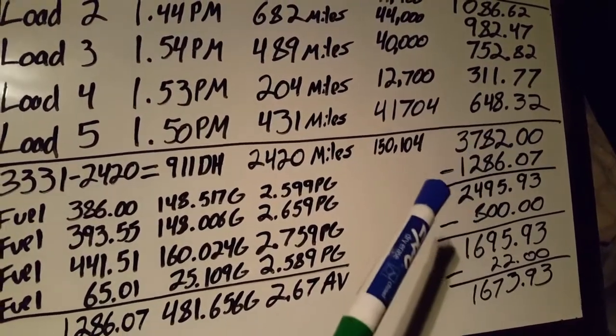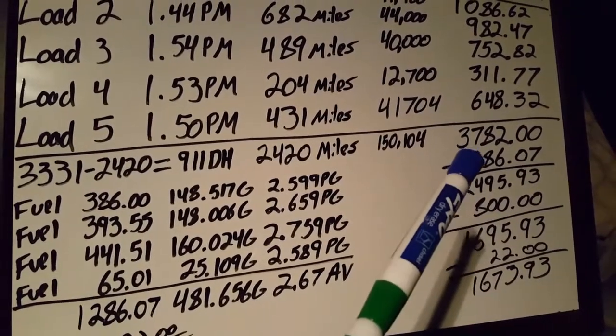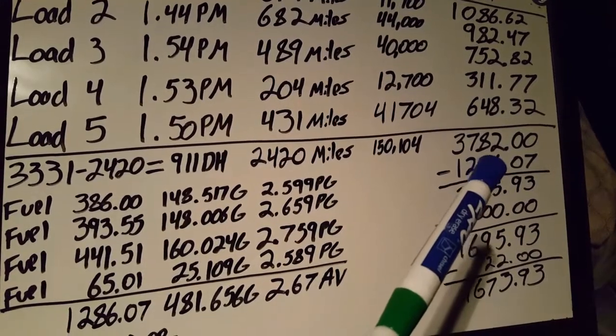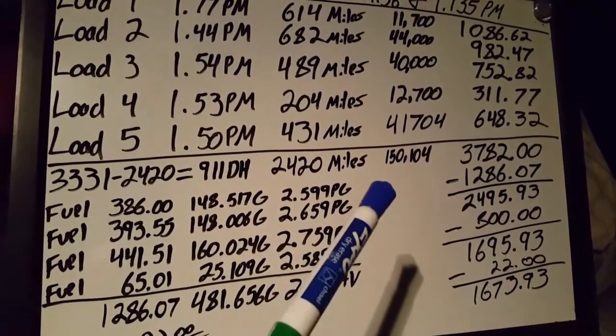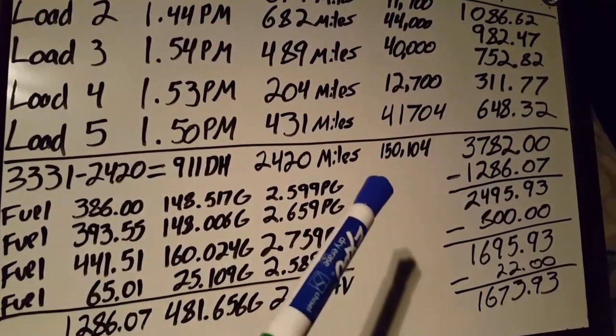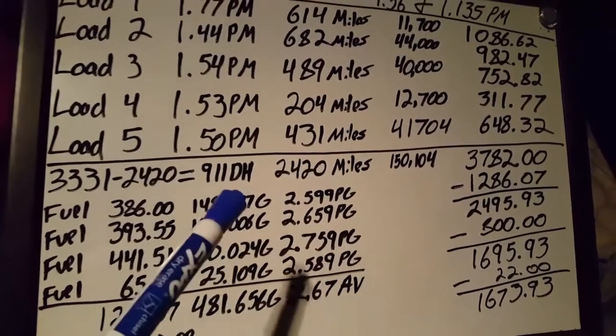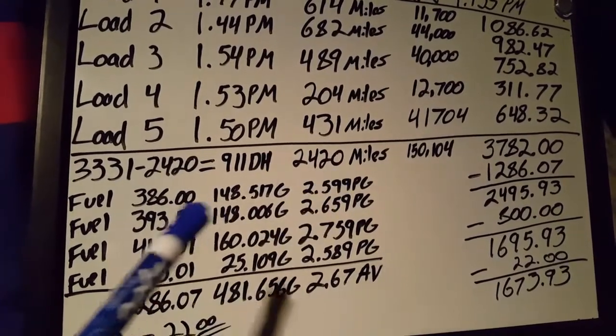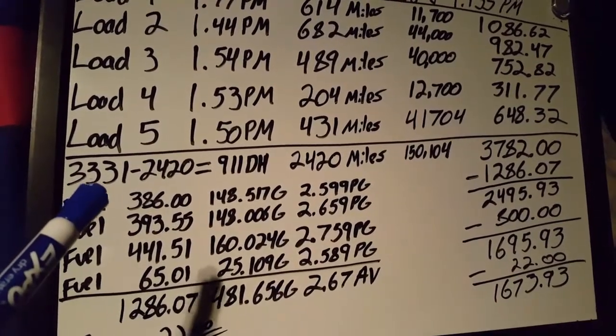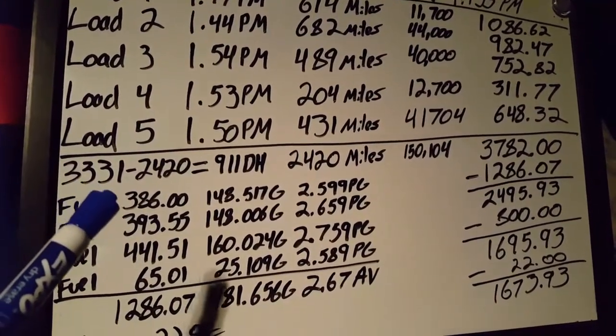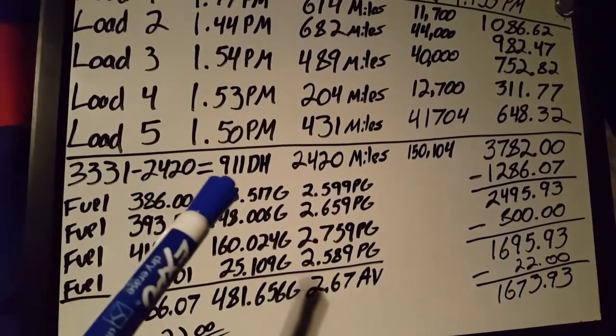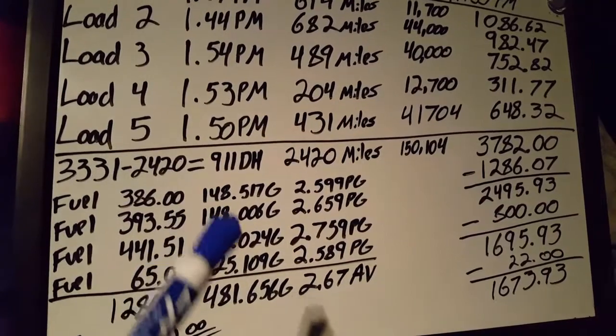Total revenue was $3,782. Total weight hauled: 150,000 pounds. Total pay miles was 2,420 miles. My total miles was 3,331. Subtract the 2,420 from that—that leaves me with 911 deadhead miles. Yeah, that was a little bit much.